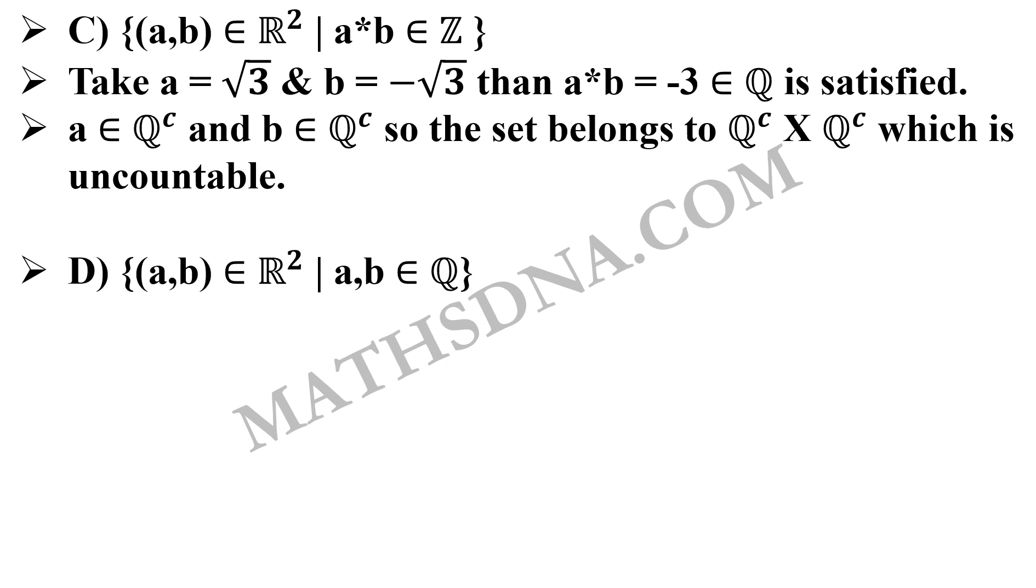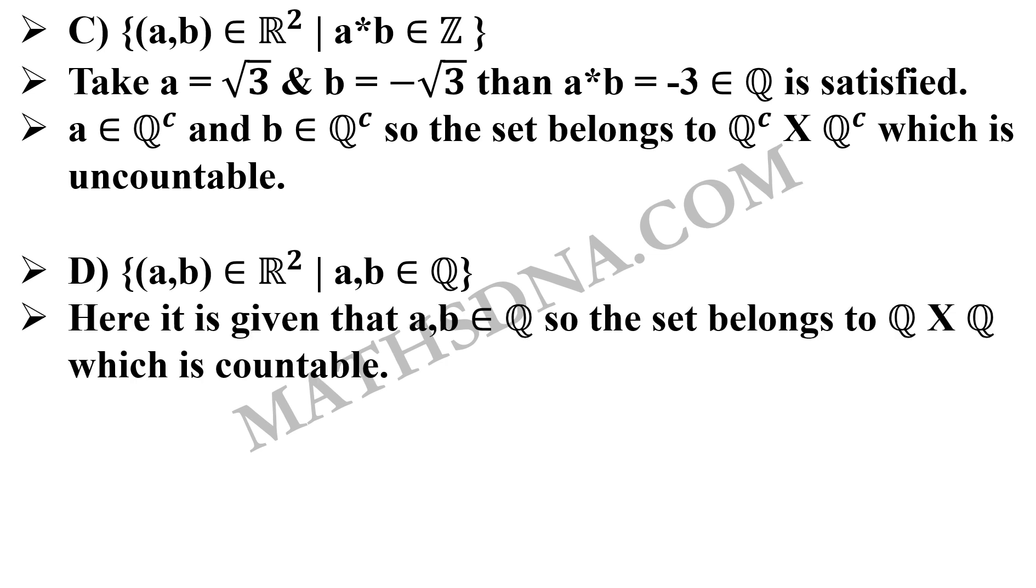Now last one, option D: {(a,b) ∈ R² | a,b ∈ Q}, the set of rational numbers. Now here they have clearly mentioned that a and b both numbers have to be rational.